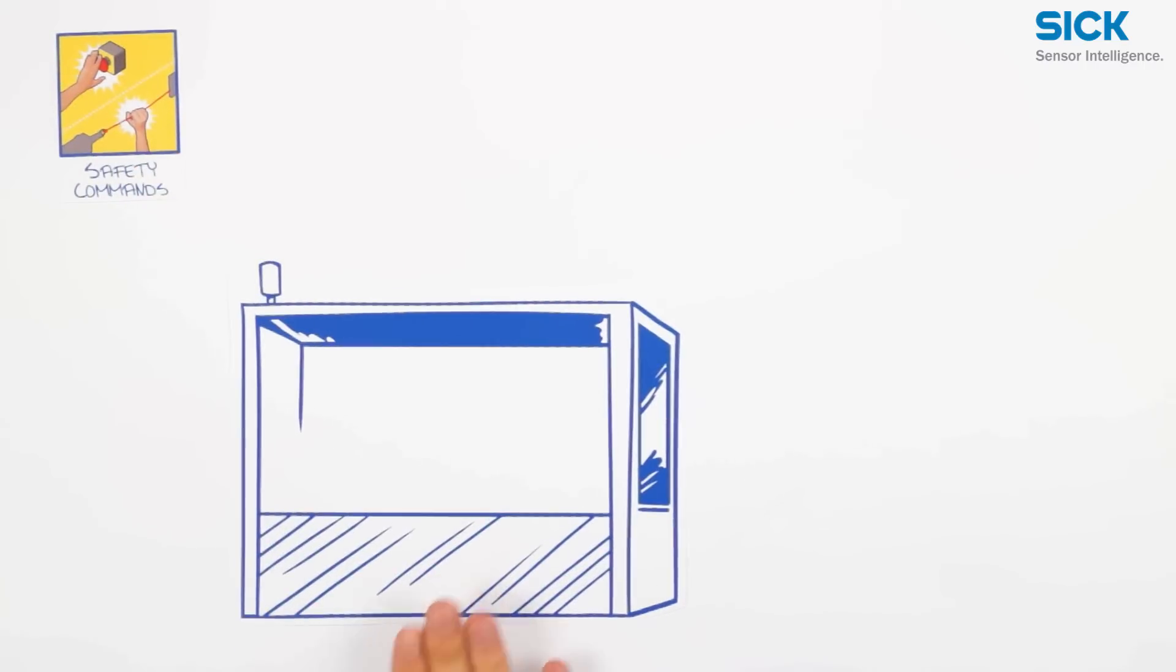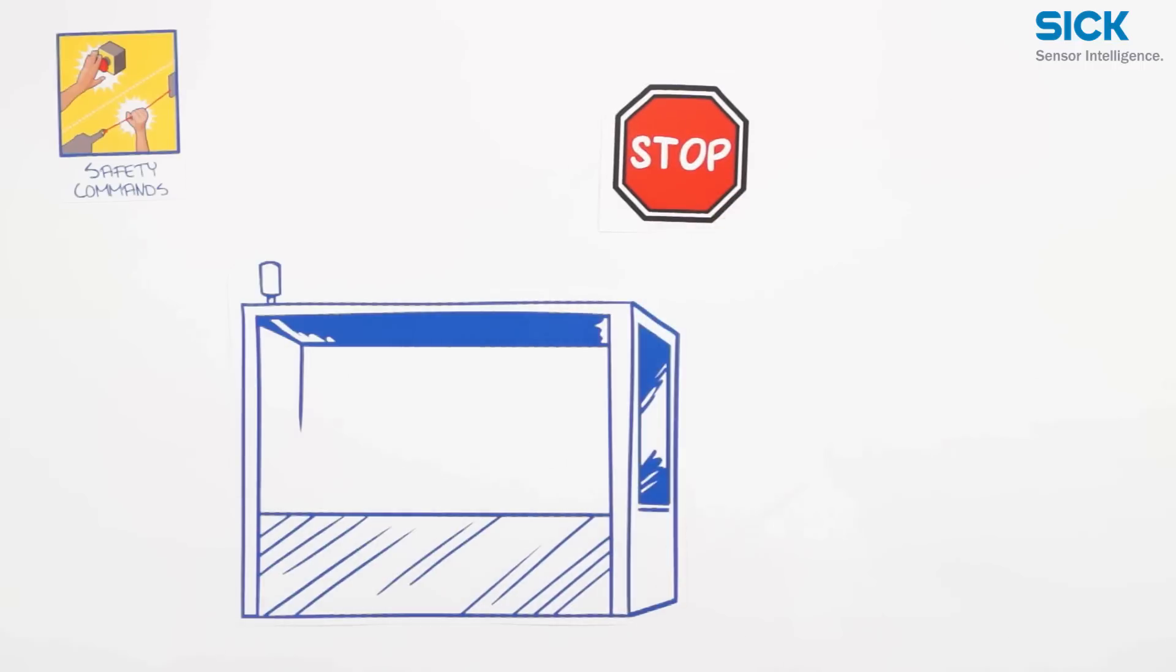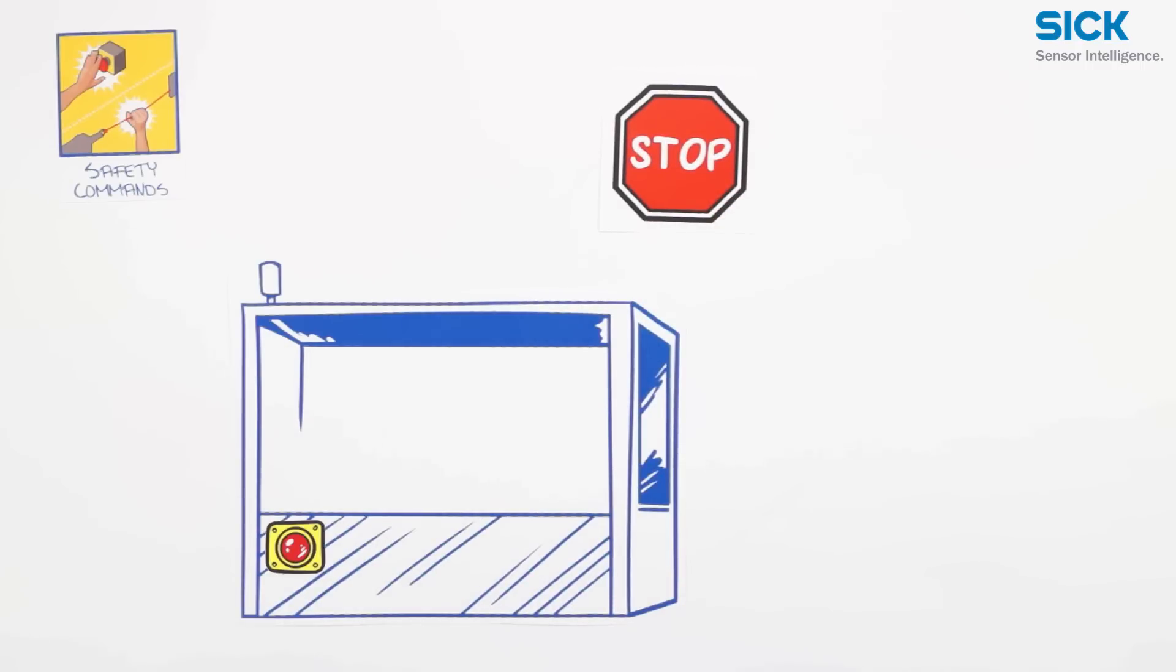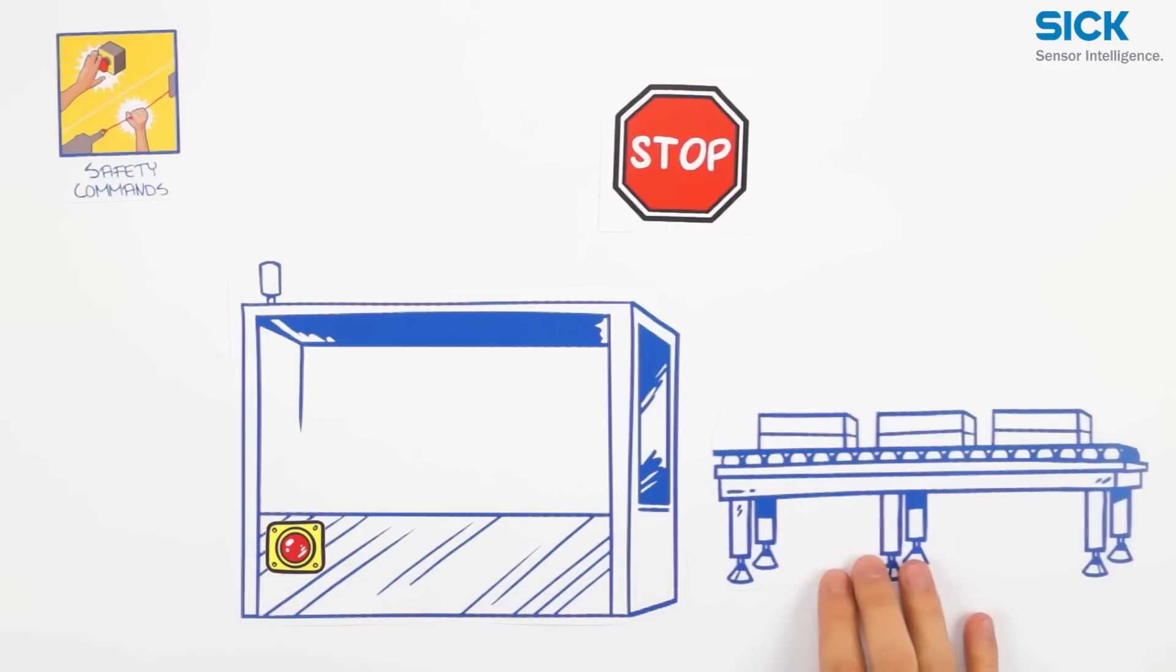And finally, let's look at safety commands. To stop a machine or system immediately in case of an emergency, emergency stop push buttons are the right choice. To do this for long distances, you should use rope pull switches.